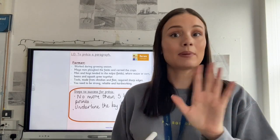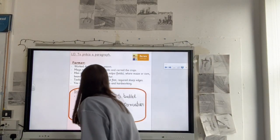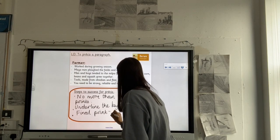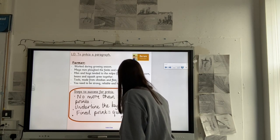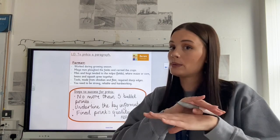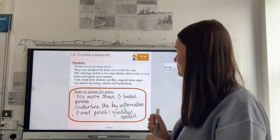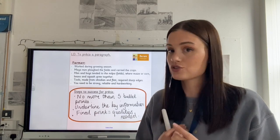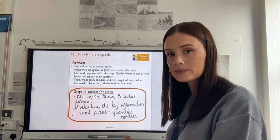Out of your five bullet points, it'd be great if you could do it in four, but your final bullet point needs to be about the types of qualities that a person would need. Let's read back our steps to success for précis: first, underline the key information — forget about all the unnecessary information; then put that into no more than about five bullet points; and remember that your final bullet point needs to be about the types of qualities that person would have. So I know straight away, without even reading a big paragraph about a farmer, that to be a farmer you need to be strong, reliable and hardworking.